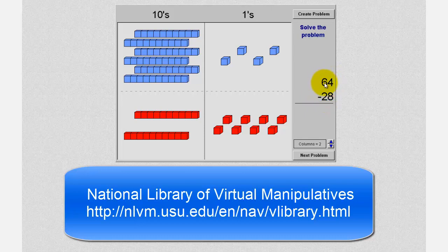Notice for 64, we have six 10 blocks and four 1 blocks. And for 28, we have two 10 blocks and eight 1 blocks.